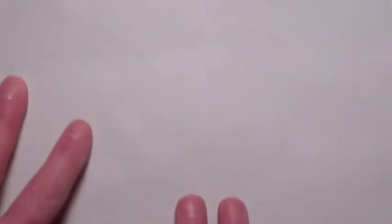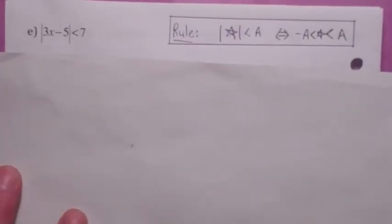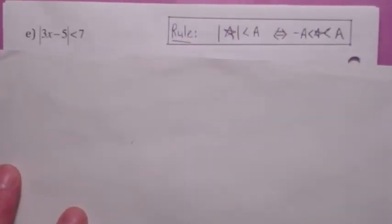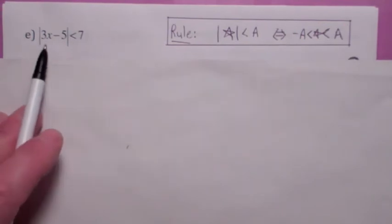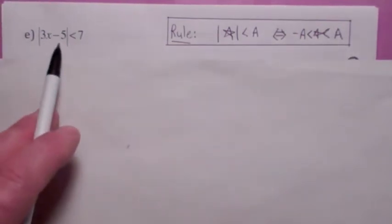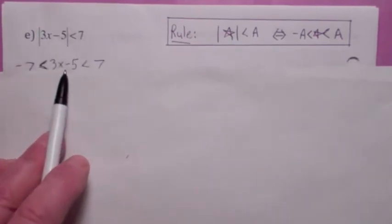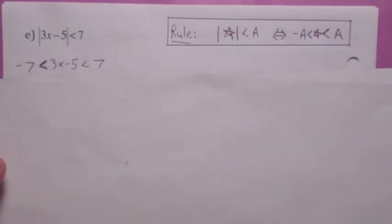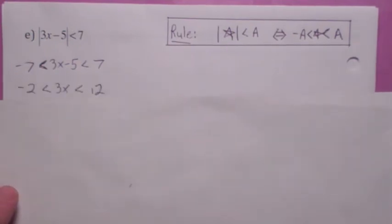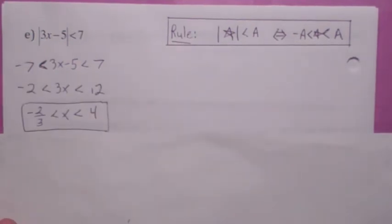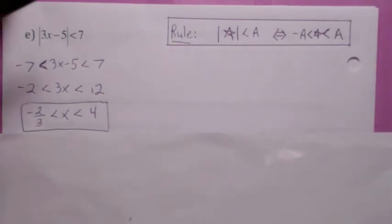Let's do some more problems. When you're solving this absolute value inequality less than seven, remember the rule: what's inside the absolute value bars has to be between negative seven and seven. So that's how you set it up. You add five, divide by three — there's your solution right there.